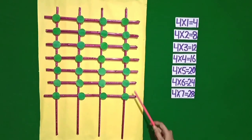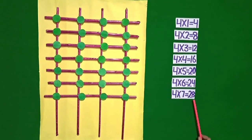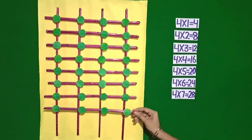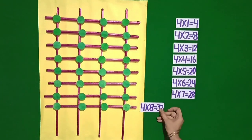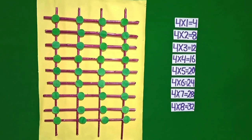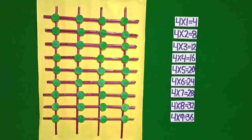Students, there are 28 intersection points. Now I am putting one more stick in horizontal position. Now there are 32 intersection points. It means 4 eights are 32. Now I am putting one more stick in horizontal position. Now there are 36 intersection points. It means 4 nines are 36.